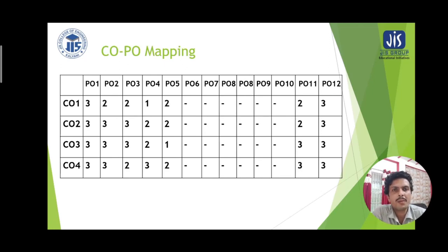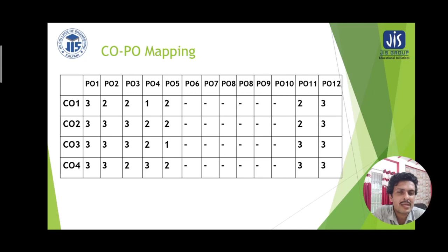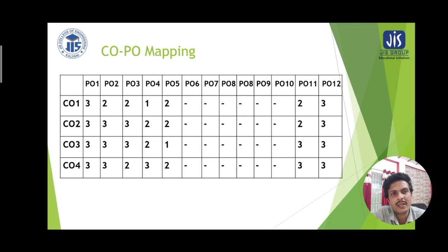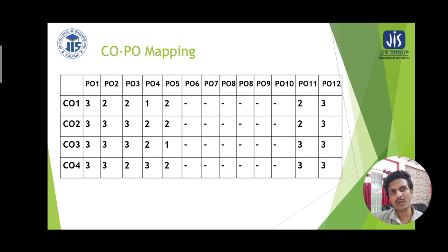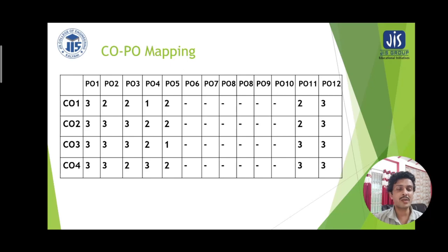In the course outcome and program outcome mapping, there are 12 number of program outcomes which are mapped to the course outcome statements. As four course outcome statements exist for basic electronics engineering, they are having different weightages assigned to each column of program outcomes. Here, 3 depicts the high weightage assigned for a certain mapping, 2 means moderate linking, and 1 stands for the least linking. When there is no link, it is kept vacant with a dashed line. Basic electronics is a foundation engineering subject as well as a basic engineering subject. It has the use of modern tools regarding simulation of circuits as well as long-term relation to the student regarding implementation of projects, so it is a lifelong learning weightage.